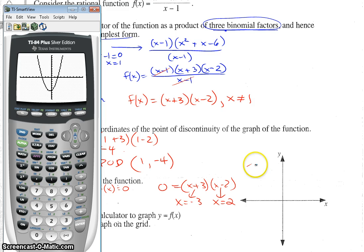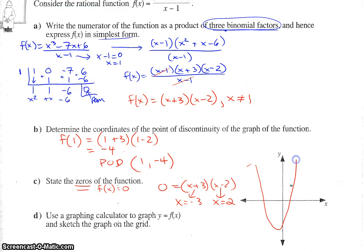So our graph actually looks something like this, and our zeros of negative three and positive two are showing up, and it looks like a parabola, even though it's starting off as a cubic in the numerator.